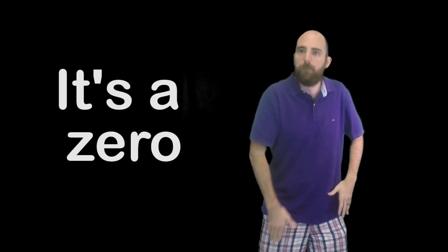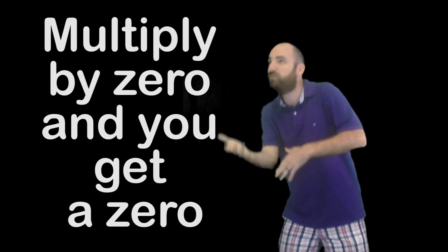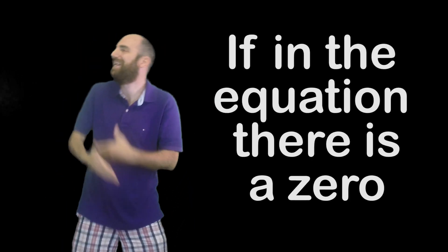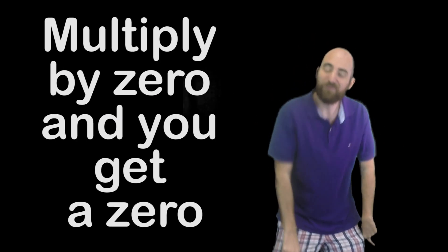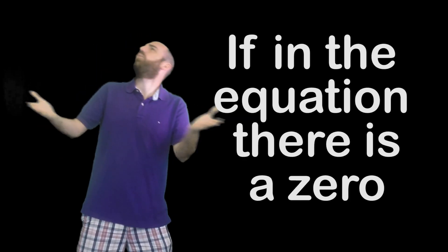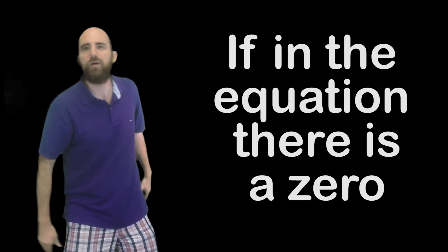It's a zero. Multiply by zero and you get a zero, the answer will always be a zero. If in the equation there is a zero, it's a zero. Multiply by zero and you get a zero, the answer will always be a zero. If in the equation there is a zero, it's a zero.